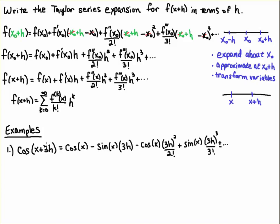And then I'm just taking this 3h here, and I'm just plugging it in. So instead of having h to the k, I'm plugging in 3h to the k. So it's going to be 3h to the zero, 3h to the one, 3h squared, 3h cubed.